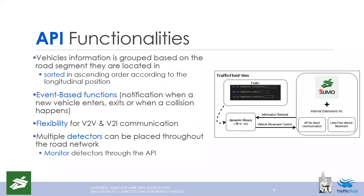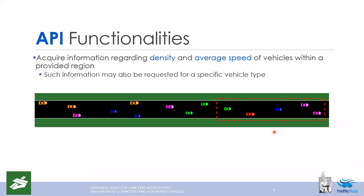One can place loop detectors in a road network and through the API obtain their measurements in an online fashion. Moreover, we can acquire information such as density and average speed of vehicles for a sub-region of a specific road segment. This information can also be requested for a specific vehicle type — for example, only vehicles of a particular type within the appointed region.